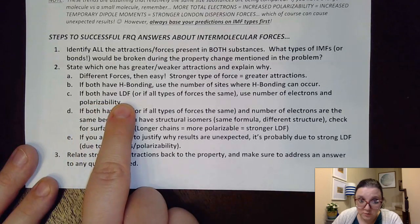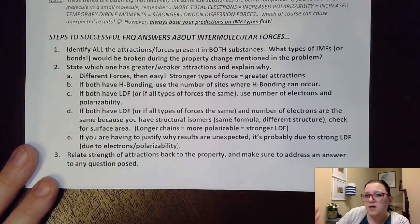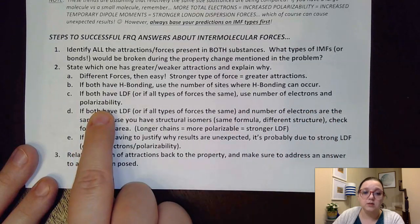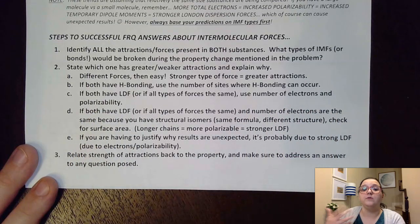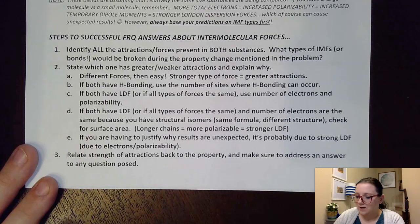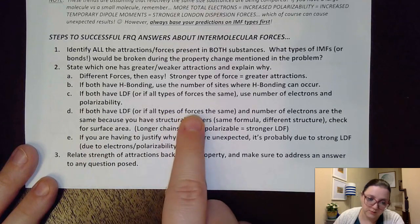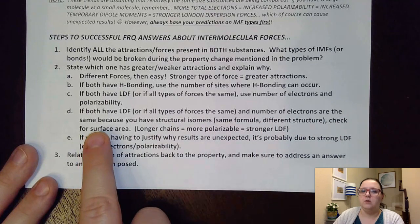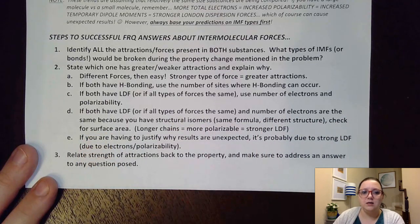If they both have London dispersion forces, or if all the types are the same and you're trying to figure out which one would be stronger or weaker, then we can use number of electrons and polarizability. As a reminder, as my number of electrons increases, that increases the polarizability of the electron cloud and gives us stronger London dispersion forces. But if they both have London dispersion forces and the number of electrons are also the same, then I can't use just the number of electrons to justify it.